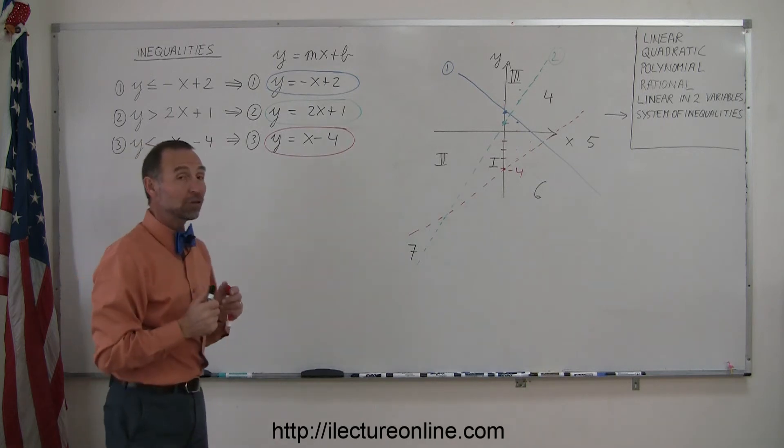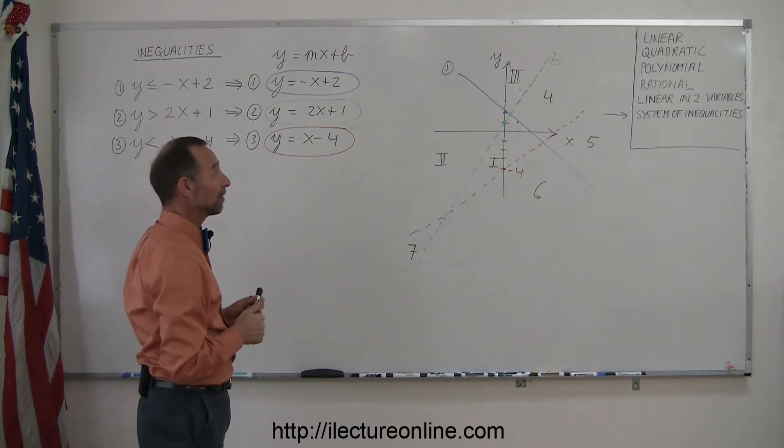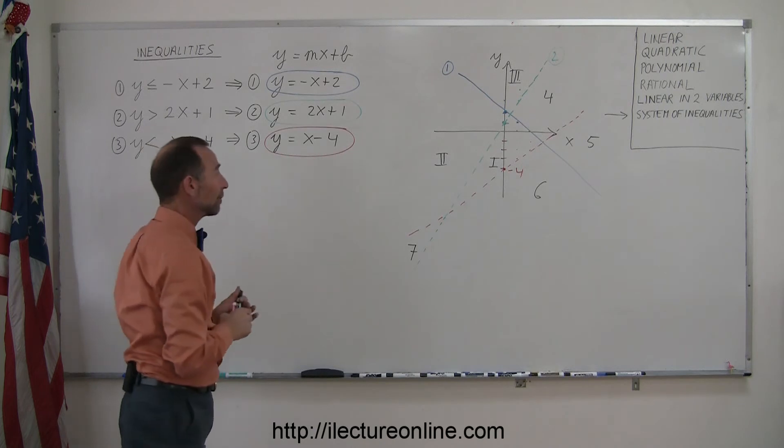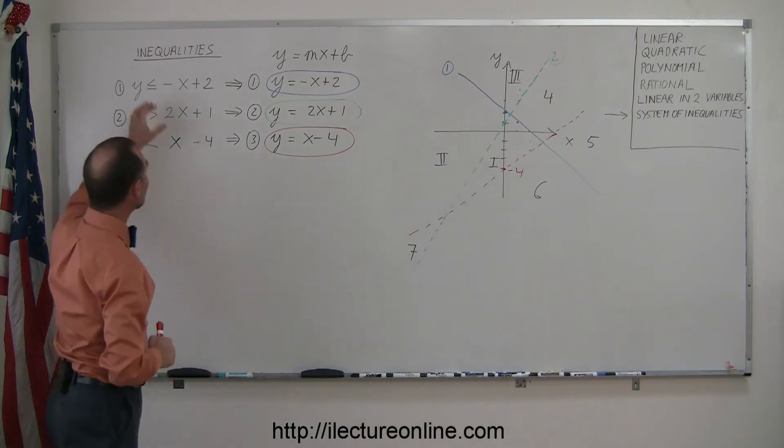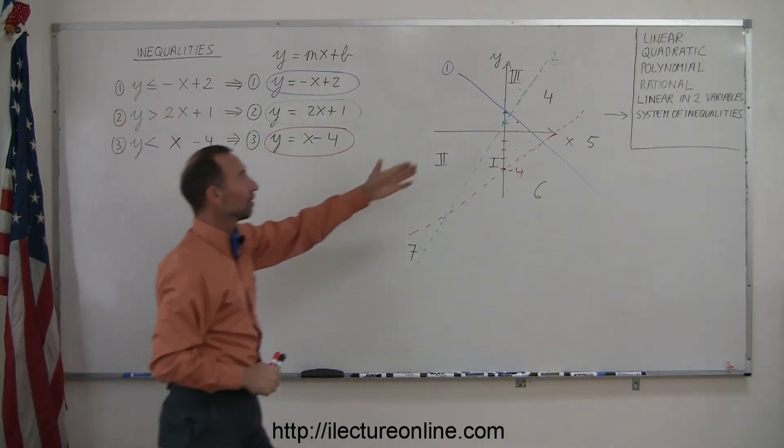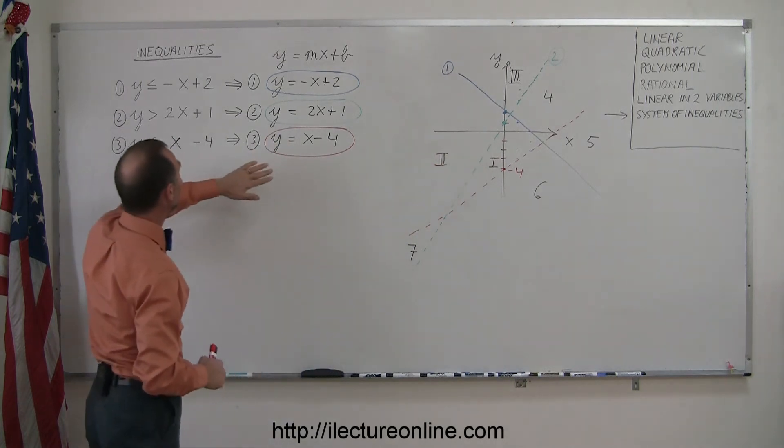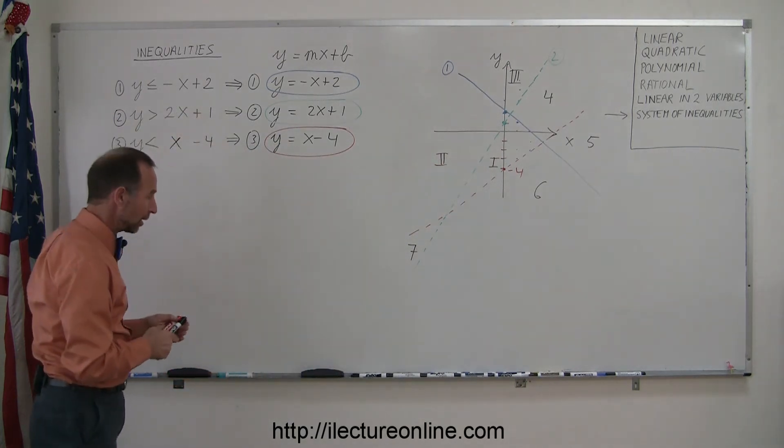To find which of those regions, and it's probably only one of those, satisfies all three inequalities at the same time, you have to then take each inequality, plug in a test point, and see if that test point lies in the region that satisfies each of the inequalities.